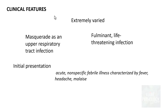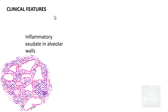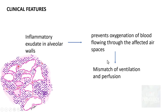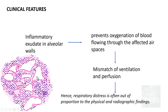Initially it presents with acute non-specific febrile illness characterized by fever, headache, and malaise. Later there is cough with minimal sputum — as compared to bacterial pneumonia where there is copious sputum production. The inflammatory exudate in the alveolar wall prevents oxygenation of blood flowing through the affected air spaces, leading to a mismatch of ventilation and perfusion. Though the alveolar space is free of exudate and ventilation is normal, perfusion is hampered, so respiratory distress in viral pneumonia is often out of proportion to the physical and radiographic findings.